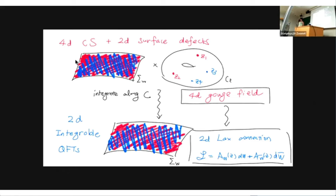I have a four-dimensional Chern-Simons theory, and I let it couple to two-dimensional defects. The two-dimensional defects feed the sigma direction, and I'm going to include many surface defects. You can integrate out the theory along the direction of the spectral curve to get an effective two-dimensional theory. There is a general guarantee that the four-dimensional equation of motion for the gauge field translates into flatness of the Lax connection, which implies infinitely many conserved charges and hence integrability. So there is a general guarantee that the resulting two-dimensional theory is integrable.